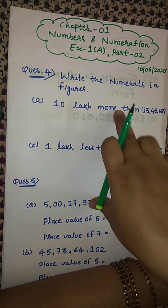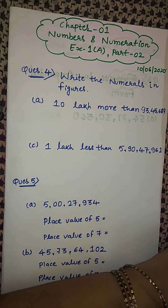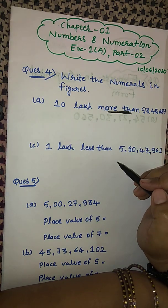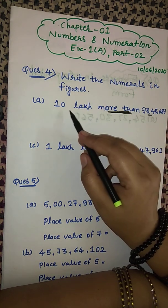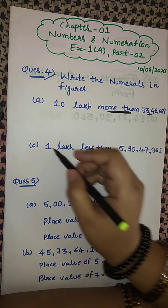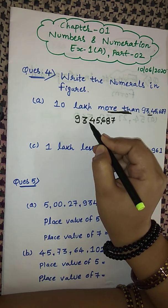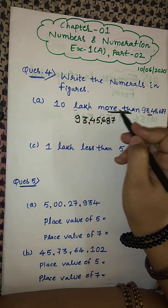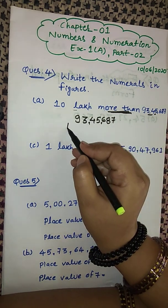We have two questions of more than and two of less than. I'll explain one of each, and the remaining two will be your homework. Our first question is 10 lakh more than 93,45,687. More than means plus, so we have to add 10 lakhs to this number. First write 93,45,687, and under it write 10 lakhs, because we have to find the number which is 10 lakh more.